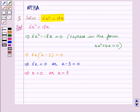So the final solution of the given quadratic equation is x is equal to 0 and x is equal to 3.